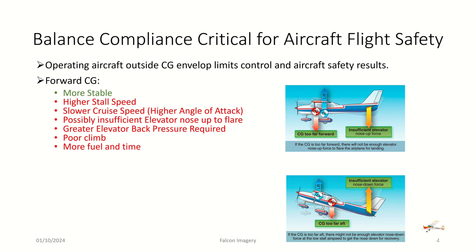All the things in red are negative. There's higher stall speeds, the plane will actually stall at a much faster speed than normal with a forward CG, slower cruise speed because of a higher angle of attack, possibly insufficient elevator nose up to flare, greater elevator back pressure required on the yoke, poor climb, and more fuel and time consumed.